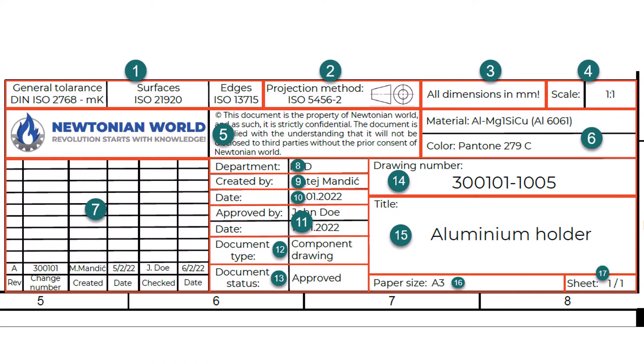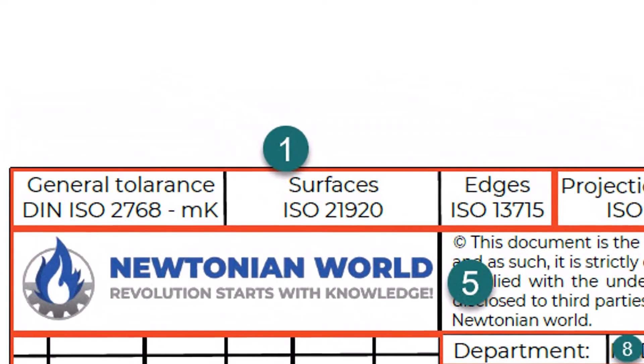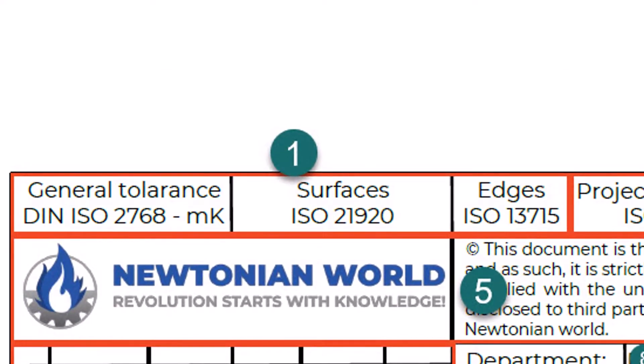Let us now look into each individual title block field. Applicable Standards: it is common to define applicable standards on the drawing, usually applicable tolerancing standards. For general tolerances, ISO 2768-1:1989 is generally used. This standard specifies general dimensional tolerances, and if the dimensional tolerance is exactly as in the standard, it is not necessary to define it on the drawing. When referring to the standard, it is also necessary to state the desired class — for example, ISO 2768-MK refers to the medium class.